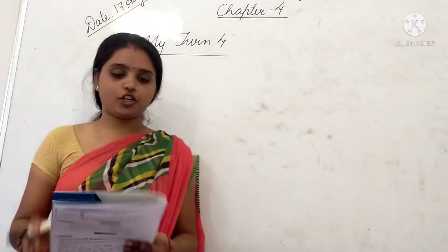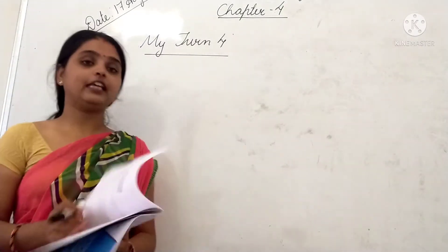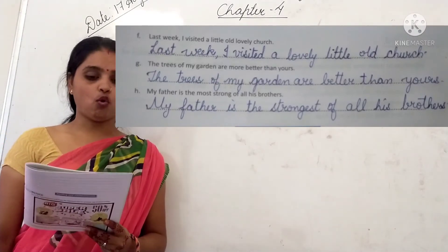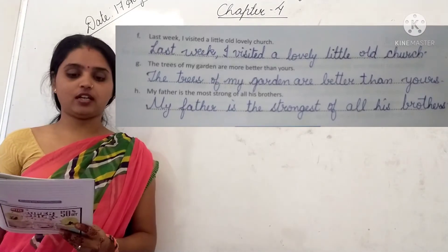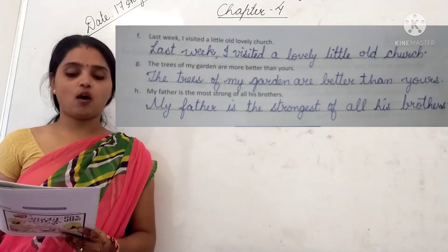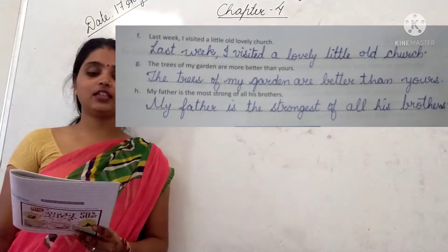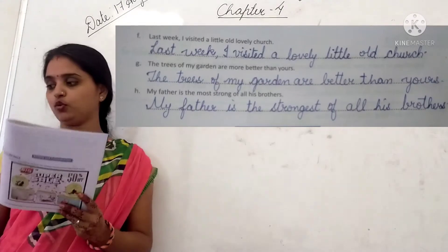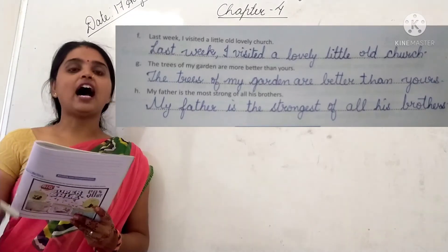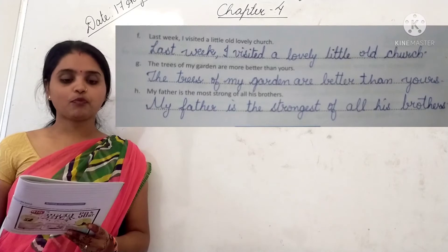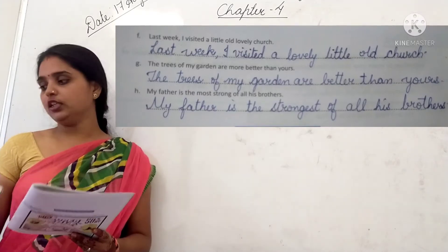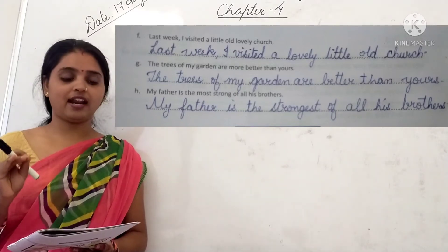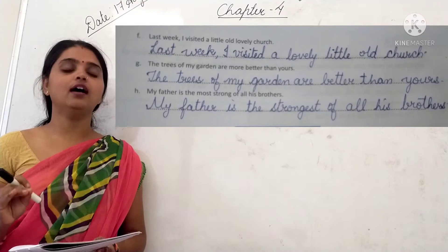Next question F: 'Last week I visited a little old lovely church.' There are three adjectives — little, old, and lovely — but the order is wrong. The correct answer is: 'Last week I visited a lovely little old church.' So the adjective order should be lovely, little, old.